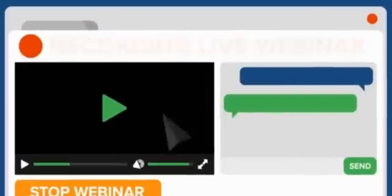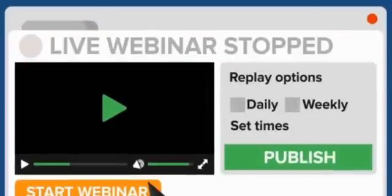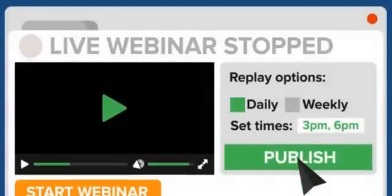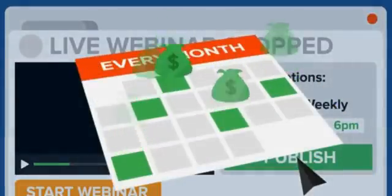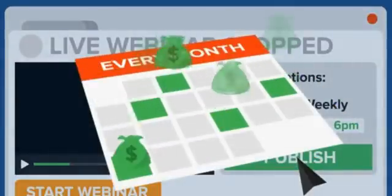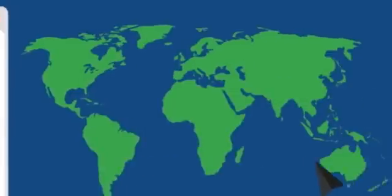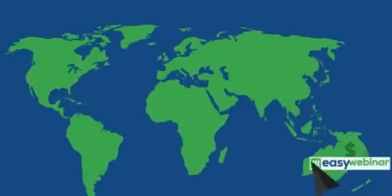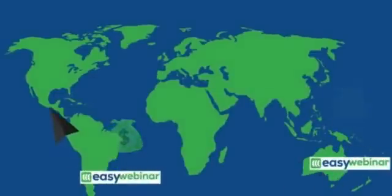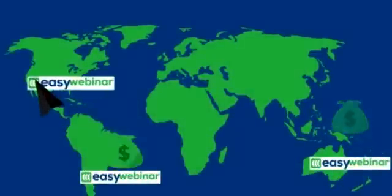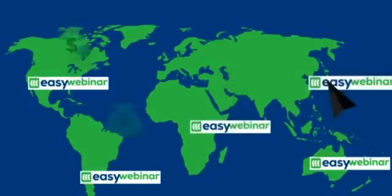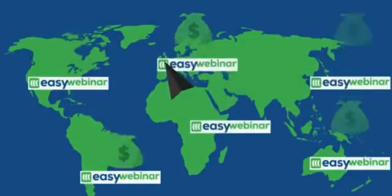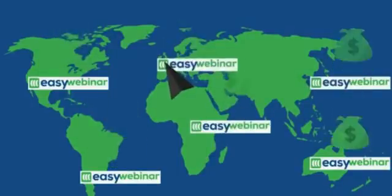You can also run an event once and immediately publish it as an automated recurring webinar that plays in real time, which can continue to make you money day after day. With just a few clicks, you can save and publish your best and most engaged webinars and automatically repeat it in multiple time zones and at multiple times over and over for maximum profit.